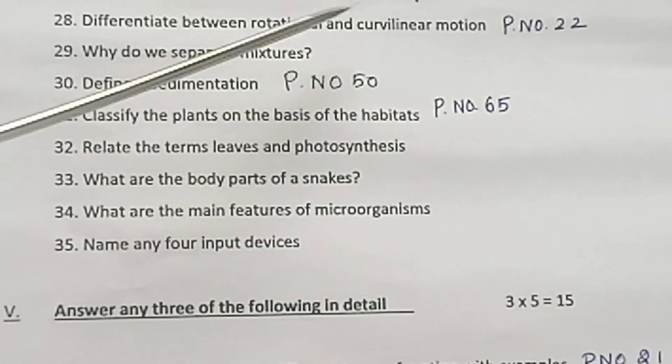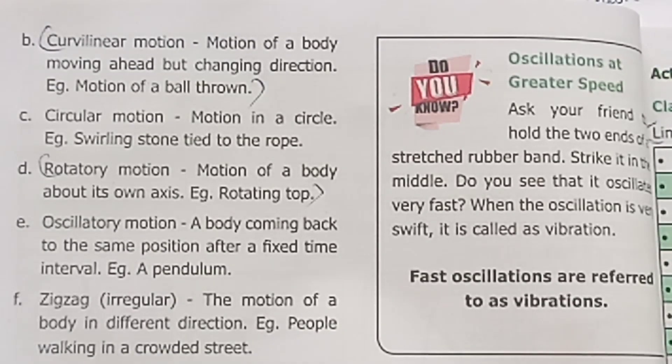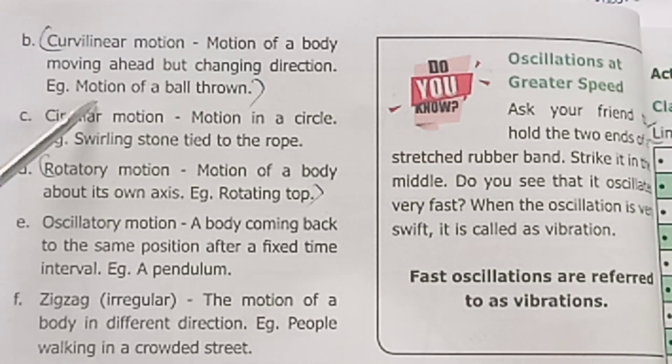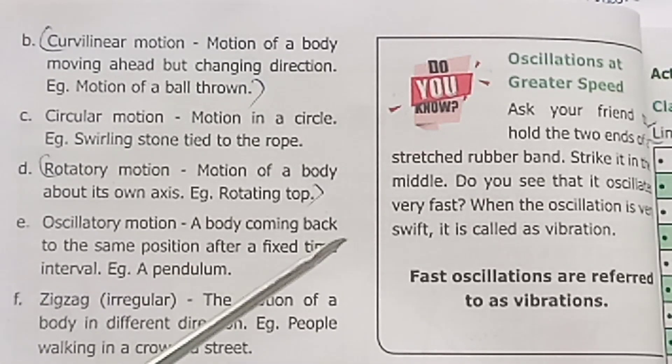Question 28. Differentiate between rotational and curvilinear motion. Page number 22. Curvilinear motion example: motion of a ball thrown. Rotatory motion example: rotating top.